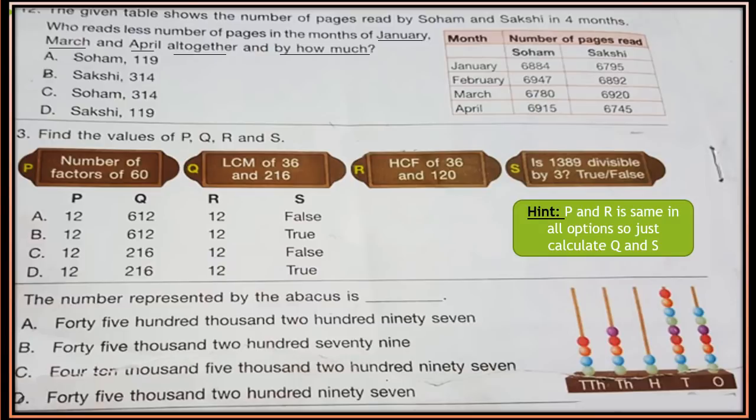Question 14: The number represented by the abacus is — look at the abacus given. Starting from 10,000s, 1,000s, 100s, 10s and 1s, count the beads at each position and write the number. Then choose which is the correct option.